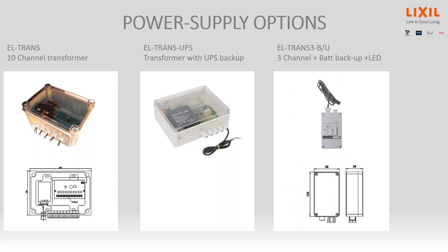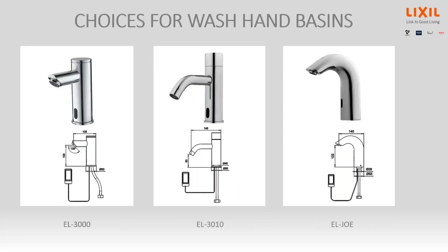Every product works either with a battery or transformer. It's more efficient to have a transformer from AC supply so you don't have to worry about changing batteries every two or three years. There's a variety of single, 3, and 10-channel units. Some come with an uninterrupted power supply backup — a large capacitor built in carrying power for 8 to 12 hours — so in South Africa, during load shedding, these things still function.